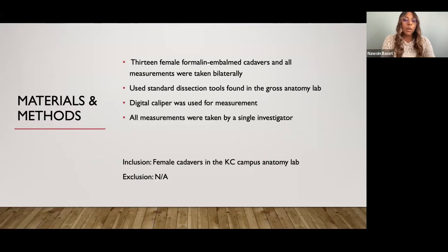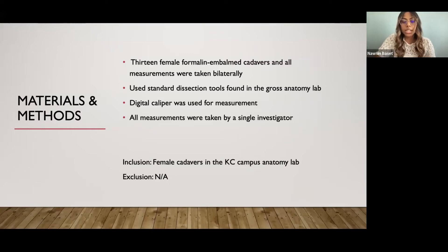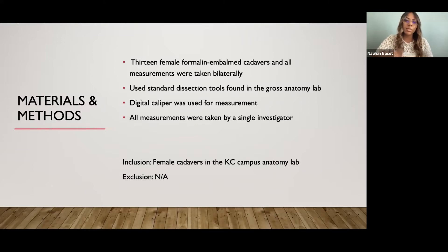For materials and methods: we used 13 female formalin-embalmed cadavers, and all measurements were taken bilaterally. We used standard dissection tools found in the gross anatomy lab, a digital caliper for measurement, and all measurements were taken by a single investigator. Due to the limited number of cadavers on the Kansas City campus, we did not apply exclusion criteria. We weren't able to use cadavers on the Joplin campus because Dr. Meister needed to insert the trocars and was unable to travel there. So we kept all female cadavers and did not use exclusion criteria.